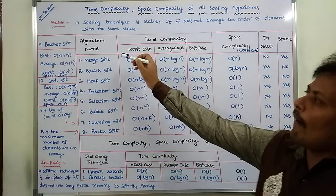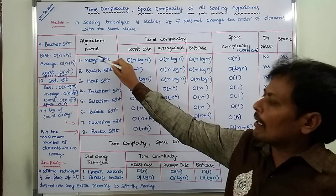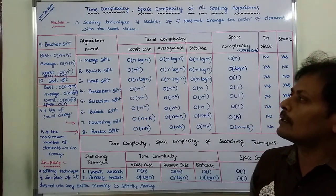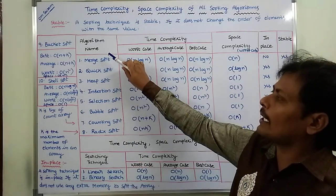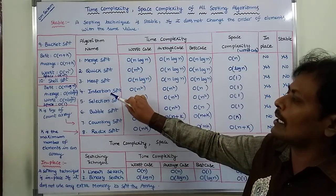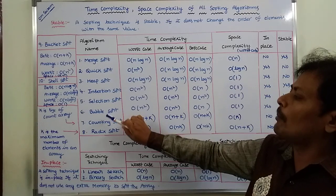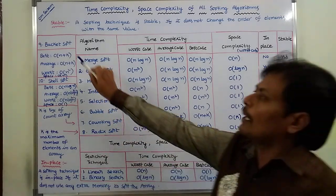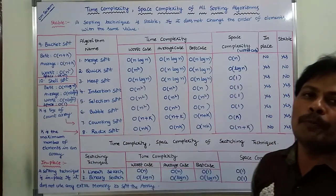So this is the Algorithm Name. These are the Sorting Algorithms — total 10 Sorting Algorithms: Merge Sort, Quick Sort, Heap Sort, Insertion Sort, Selection Sort, Bubble Sort, Counting Sort, Radix Sort, Bucket Sort, and Shell Sort.